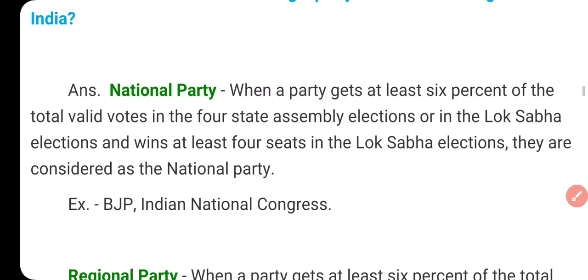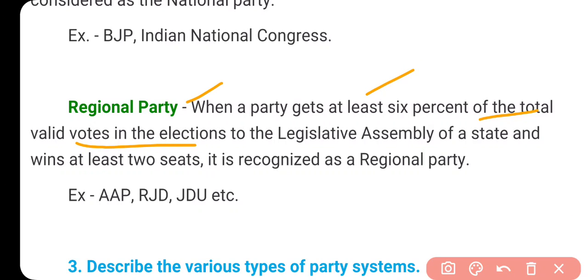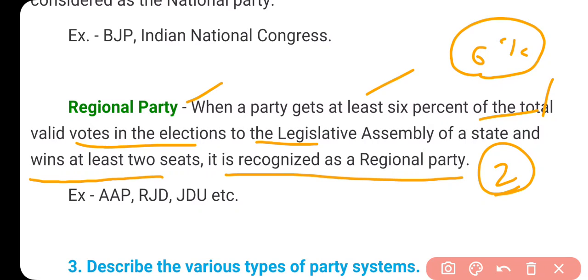For regional political parties — when a party gets at least 6% of the total valid votes in elections to the state assembly, and wins at least two seats, it is recognized as a regional political party. For example, Aam Aadmi Party, RJD, JDU — these are recognized regional political parties, as they are eligible for regional recognition but not for national party status.